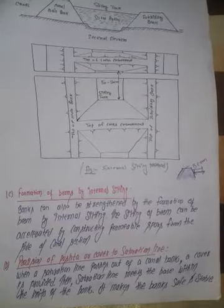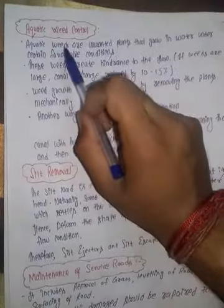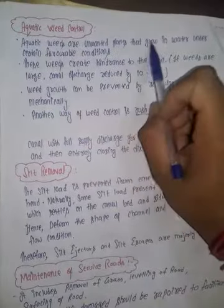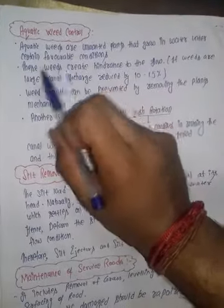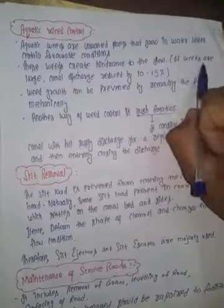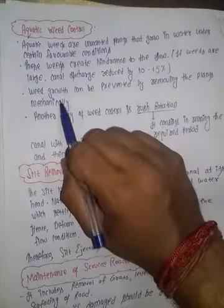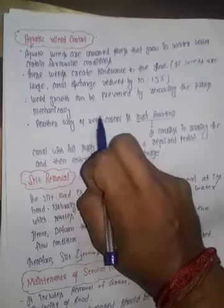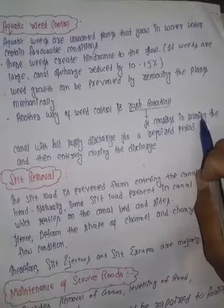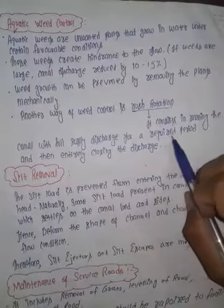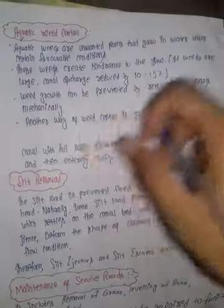Additional methods for canal maintenance include aquatic weed control, silt removal, and maintenance of the service road. Aquatic weeds are unwanted plants that grow in water under unfavorable conditions; these weeds create a hindrance to the flow of water. If the weeds are large, the canal discharge can be reduced by 10 to 15 percent. Weed growth can be prevented by removing the plants mechanically, or by rush rotation — which consists of running the canal at full supply discharge for a required period and then entirely closing the discharge.